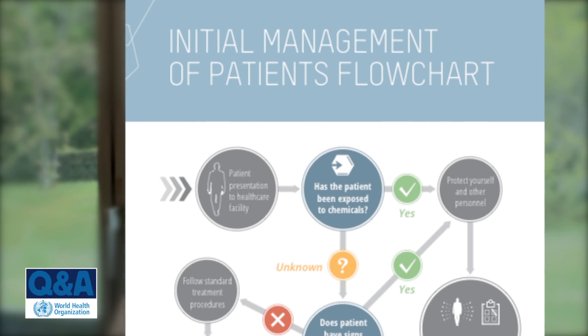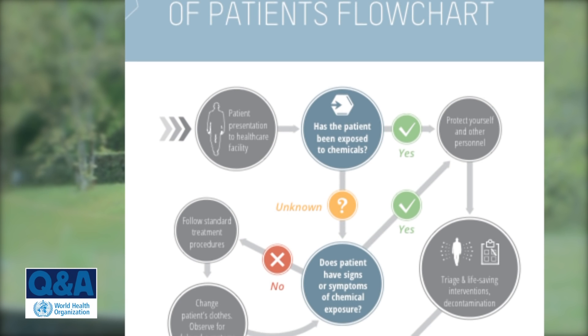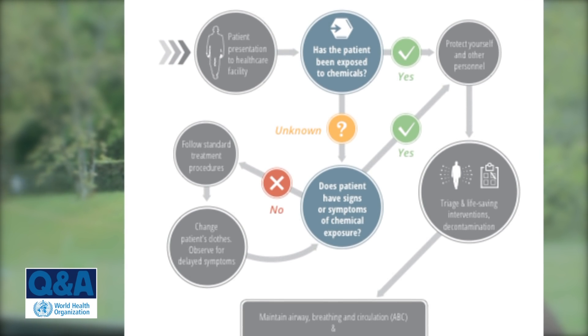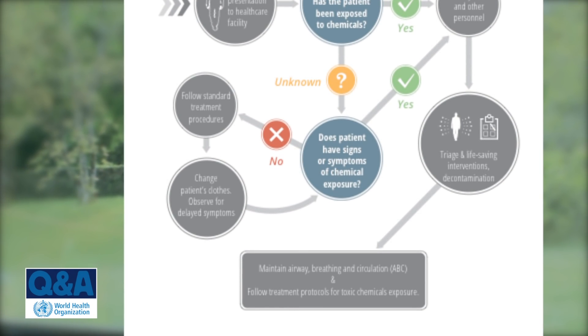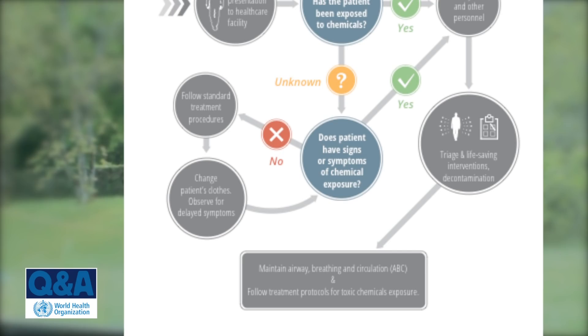There are a number of classes of chemicals known to have long-term effects in populations. For instance, some of the blister agents are known to have long respiratory tract consequences on people that are exposed, and can also lead to cancers and other health effects. What we know about nerve agents and some other classes of chemicals is quite limited, partly because these chemicals have been quite rarely used on human populations.